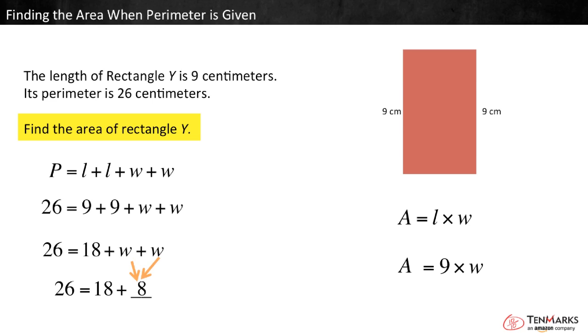Remember, the width is the same on both sides of the rectangle. Both w's have the same value. So, what number added to itself makes 8? 4 plus 4 equals 8. So, the width of the rectangle is 4 centimeters.